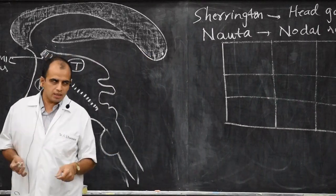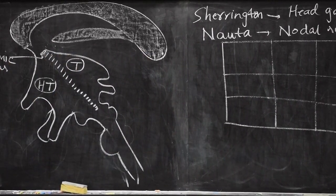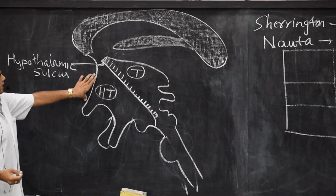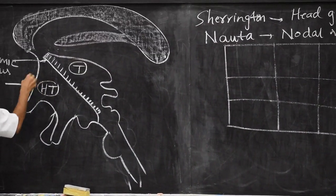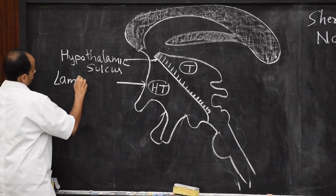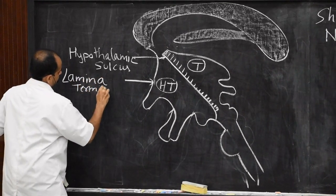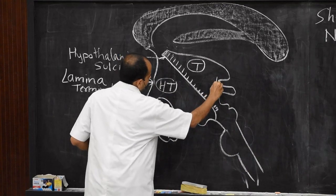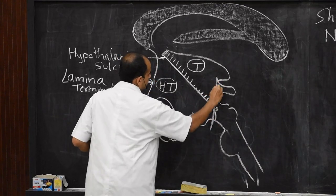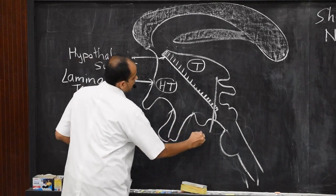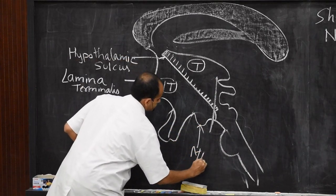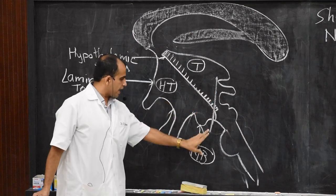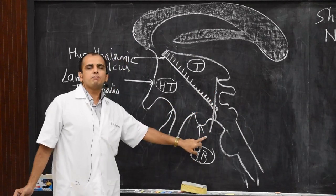Now looking at the relations of the hypothalamus: anteriorly it is related to the lamina terminalis. Posteriorly, it extends up to an imaginary vertical line just behind the mammillary body. So the anterior extent is the lamina terminalis, and the posterior extent is an imaginary vertical line just behind the mammillary body.